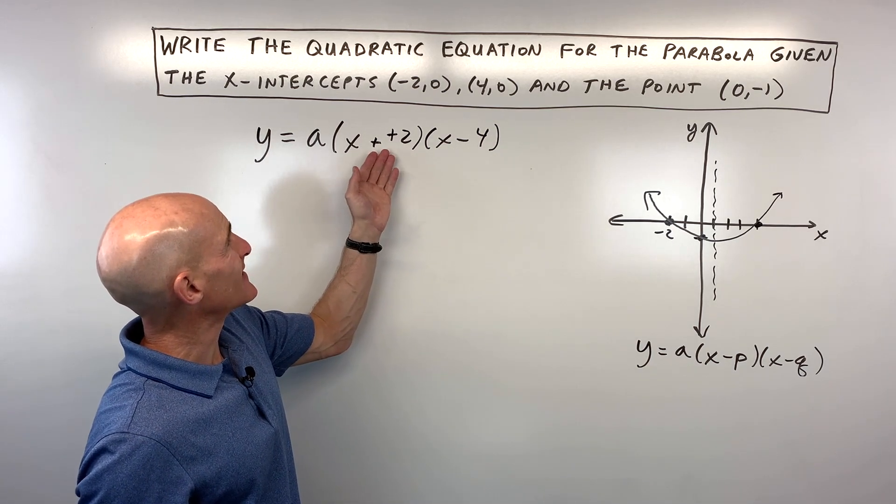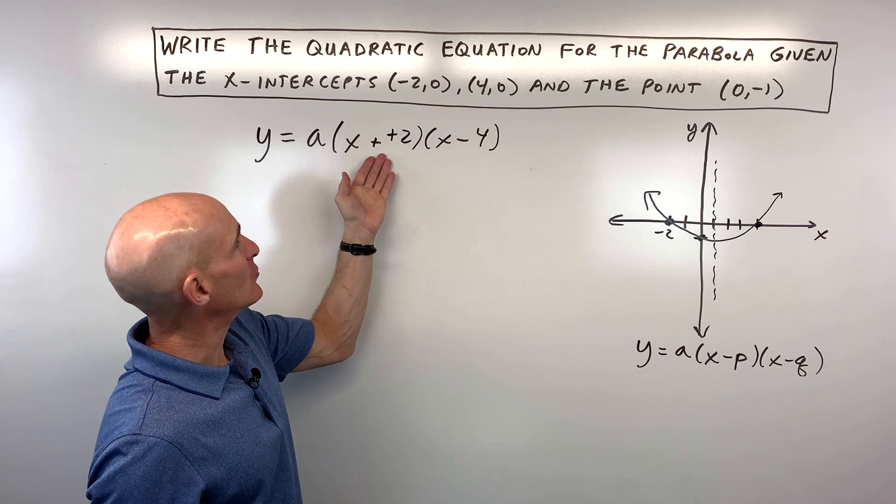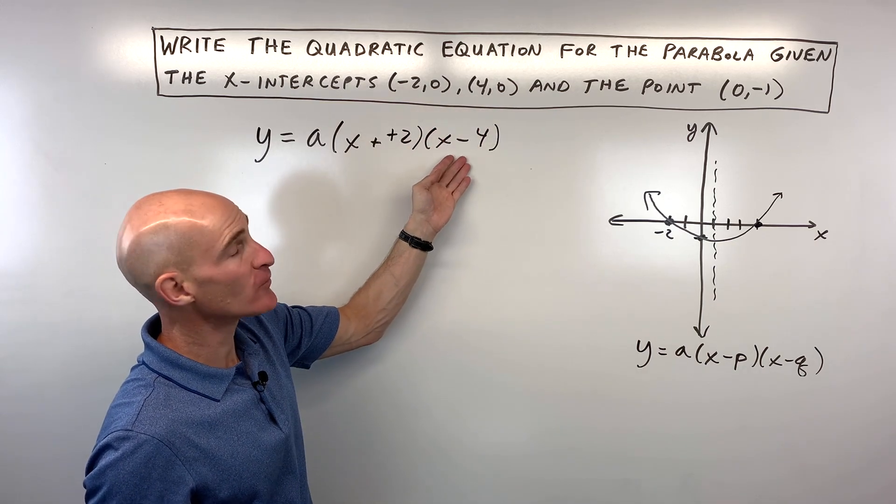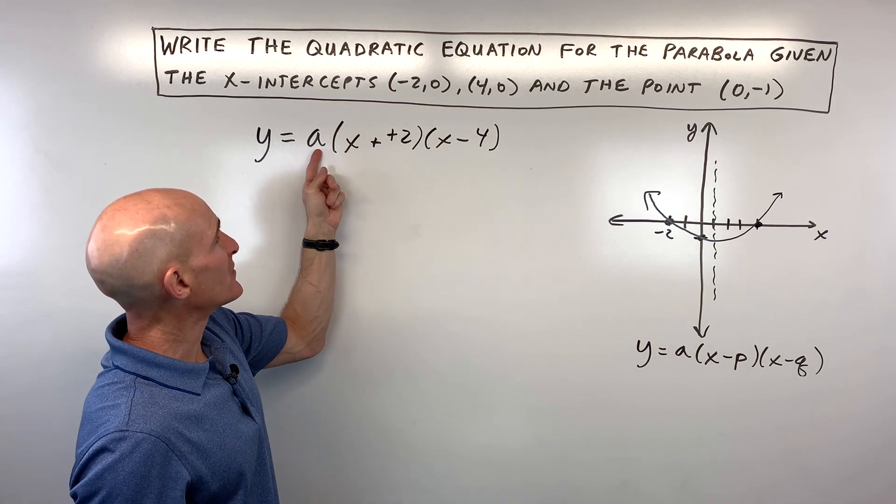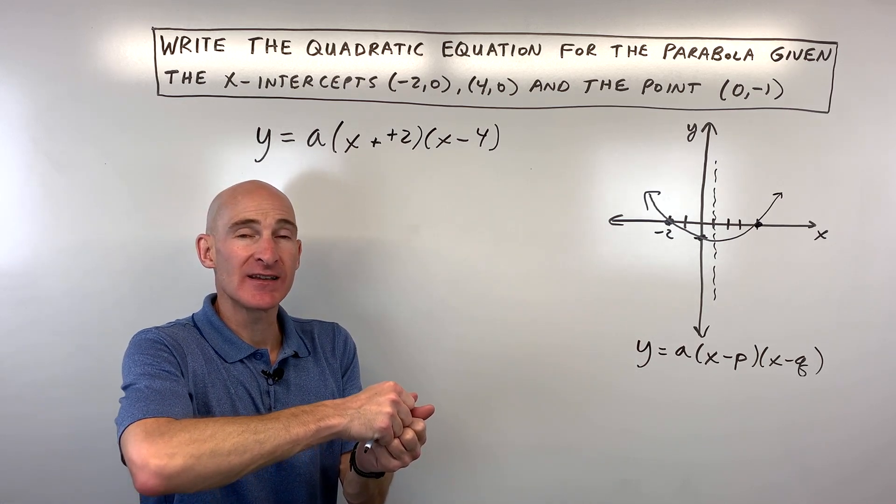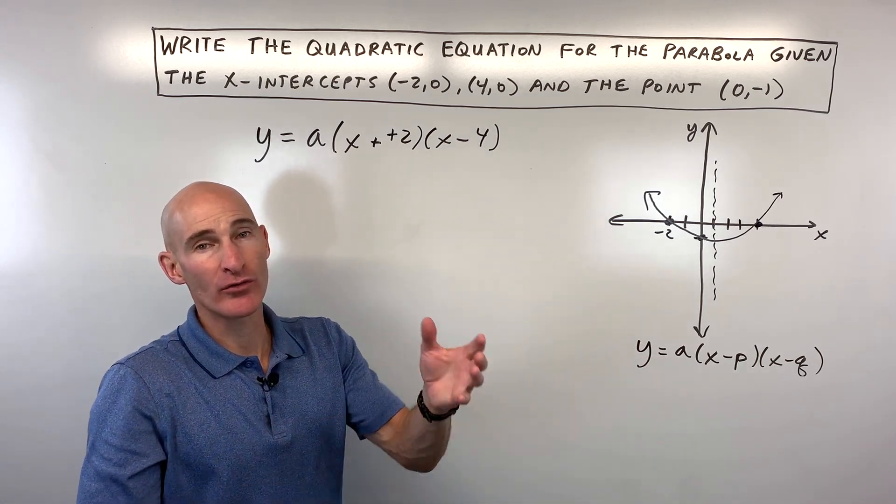Some students kind of remember it's like the opposite. See, this is a negative 2, but this is positive 2. This is positive 4. This is like a negative 4. But we need to find out what this a value is. The a represents the stretch or the shrink or the reflection.